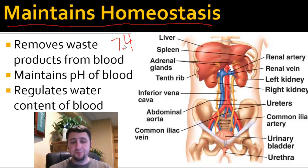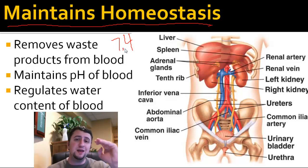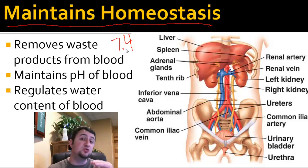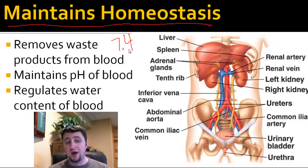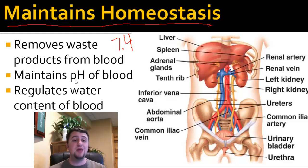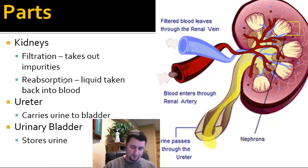When the acidity of your blood goes too low, or it goes too basic or too high, your body doesn't work properly. So your excretory system helps to keep that pH in check. It also helps to regulate the amount of water that's in our blood.